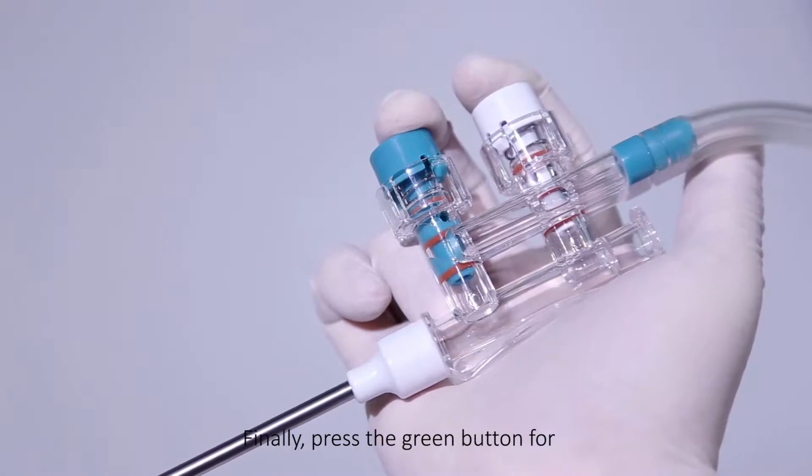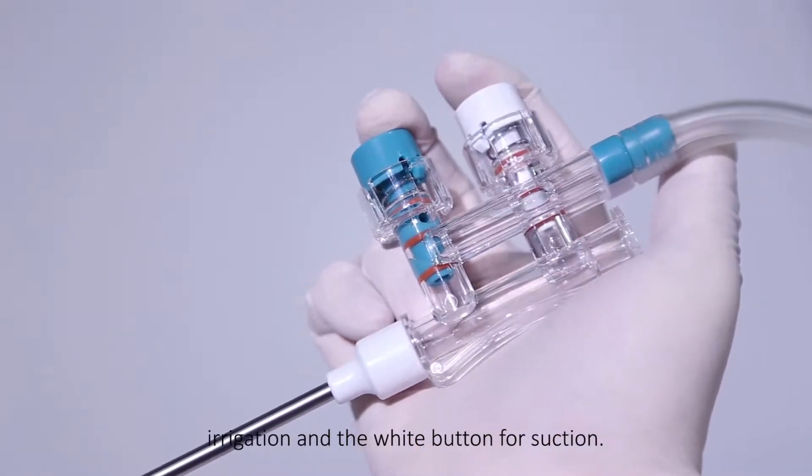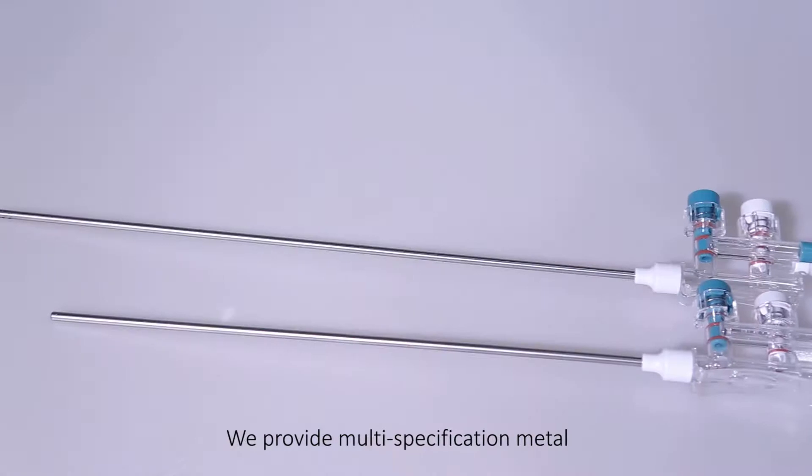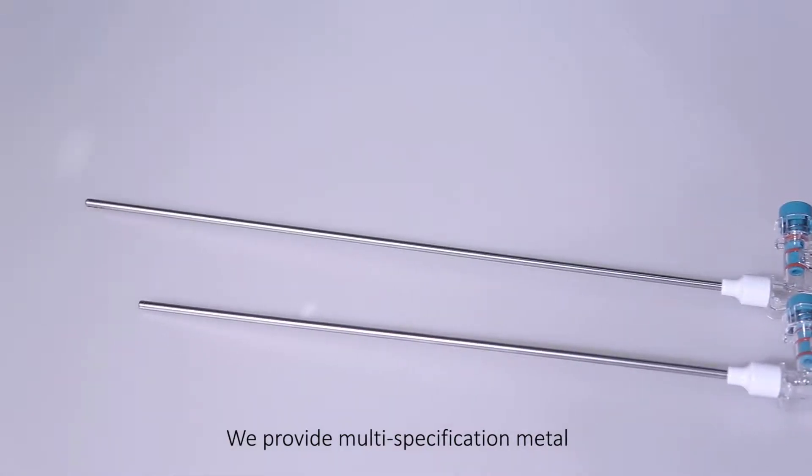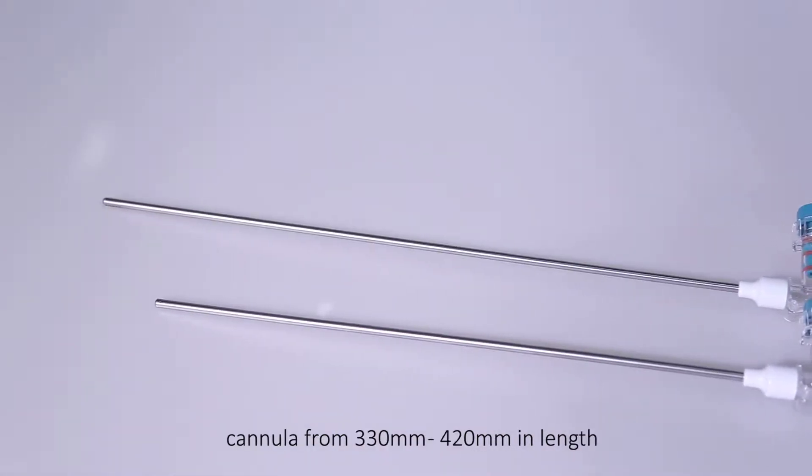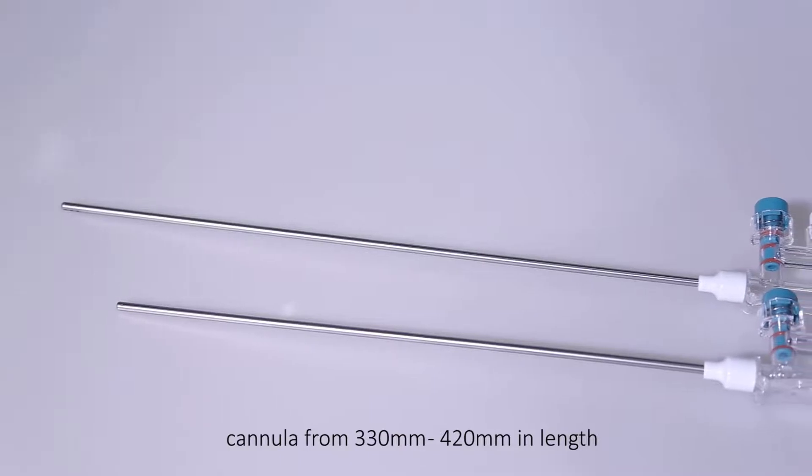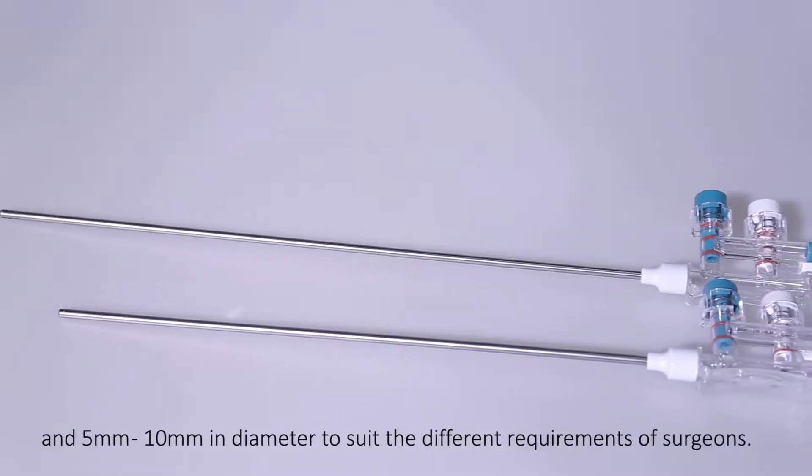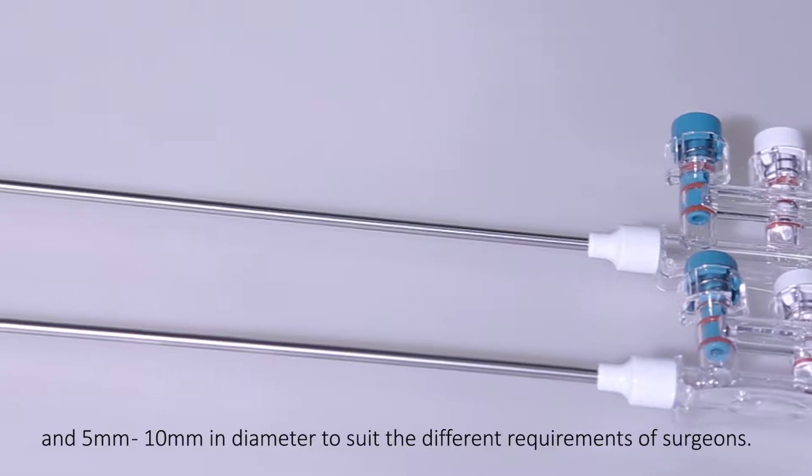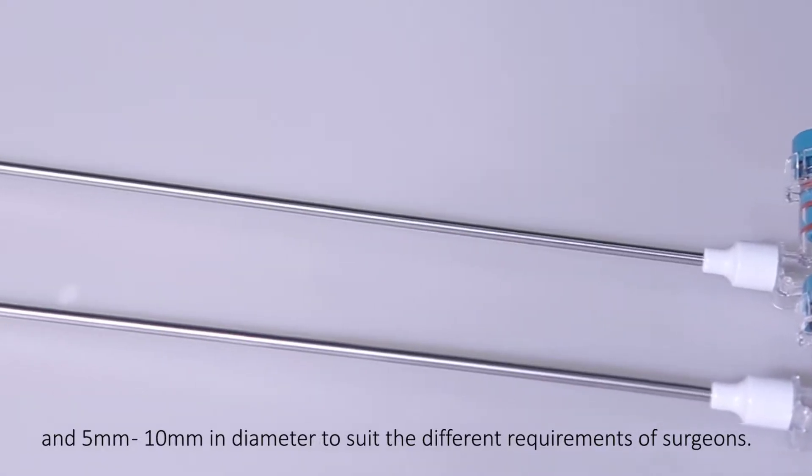Finally, press the green button for irrigation and the white button for suction. We provide multi-specification metal cannula from 330 mm to 420 mm in length and 5 mm to 10 mm in diameter to suit the different requirements of surgeons.